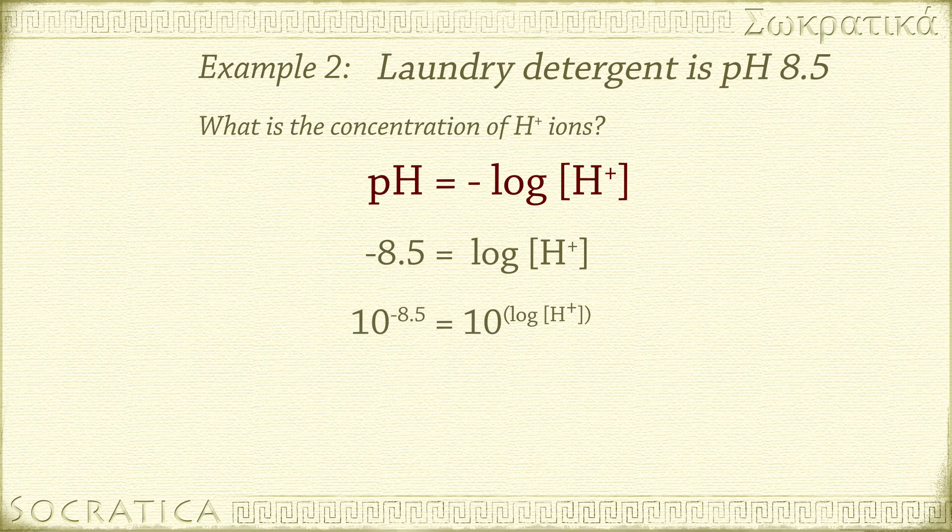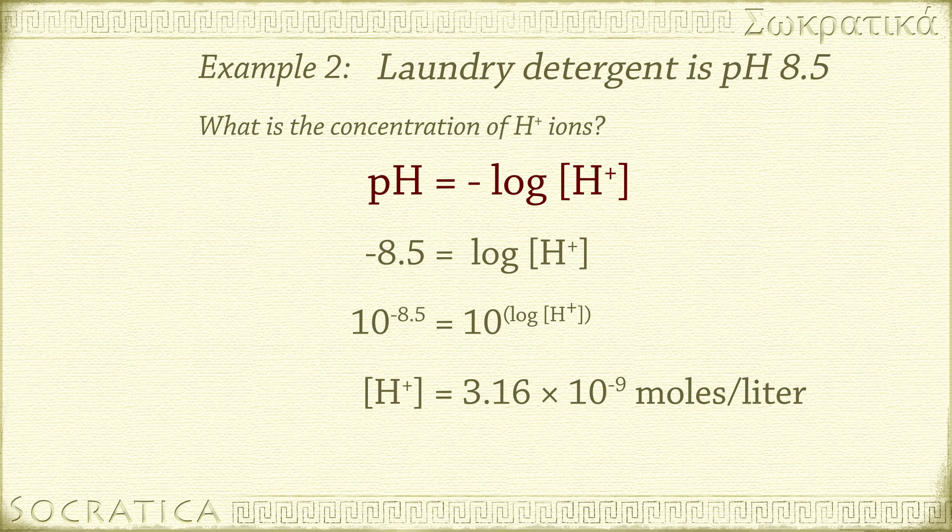10 to the negative 8.5 equals 10 to the log of the concentration of H+ ions. The concentration of H+ ions equals 3.16 times 10 to the negative 9 moles per liter. Notice that this is much less H+ than in lemon juice.